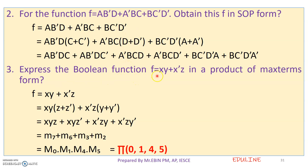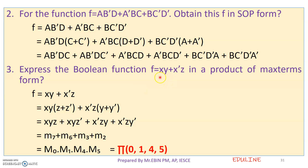The other question is: express the boolean function f = xy + x̄z in the product of maxterms form. The maxterm form is called the POS canonical form. We will use the variables; the canonical form will use all variables. If we have a maxterm form, it is not the same as the SOP.